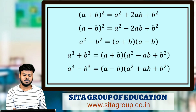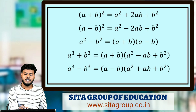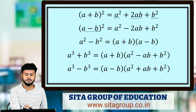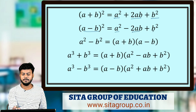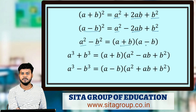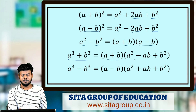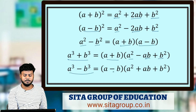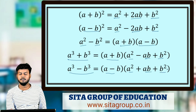Look at the screen: (a+b)² = a² + 2ab + b²; (a-b)² = a² - 2ab + b²; a² - b² = (a+b)(a-b); a³ + b³ = (a+b)(a² - ab + b²); and a³ - b³ = (a-b)(a² + ab + b²).